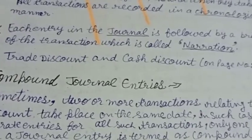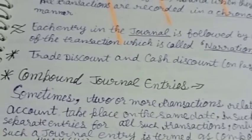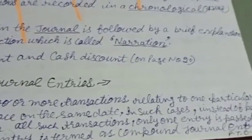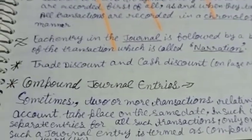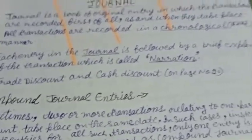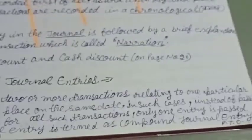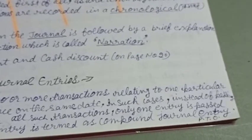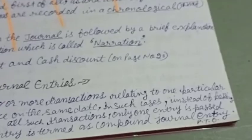In some cases, instead of passing separate entries for all such transactions, only one entry is passed. In such cases we pass a single entry for all transactions — such entries are termed as compound journal entries.